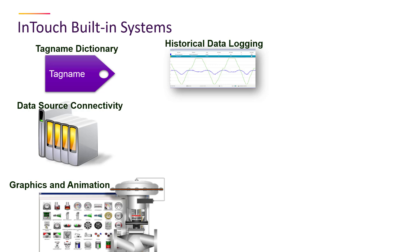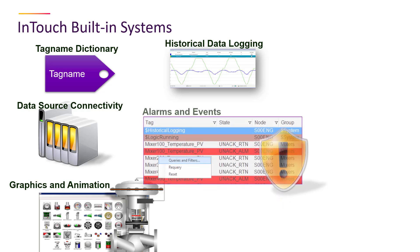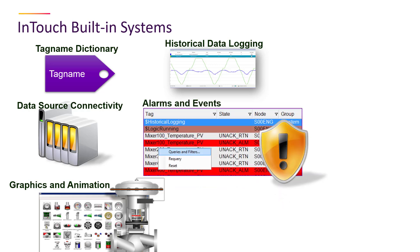Historical data logging: data logging to a native historical engine or the high-performance Aviva historian. Alarm and event handling: an alarm engine and associated graphical components for enunciating, visualizing, filtering, and acknowledging alarms.